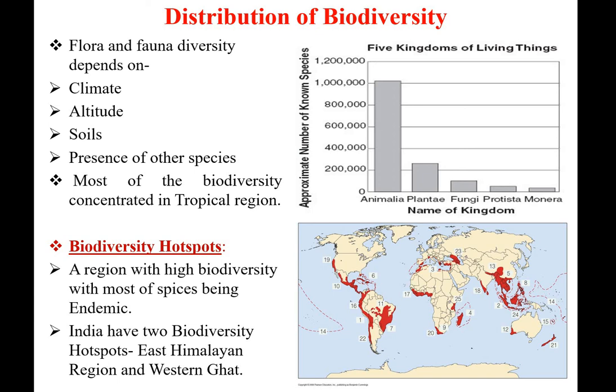Biodiversity hotspots refer to regions with high biodiversity where most of the species are endemic. Endemic means the species are present only in that particular geographical region and are not found elsewhere in the world. India has two biodiversity hotspots: the East Himalayan region and the Western Ghats.